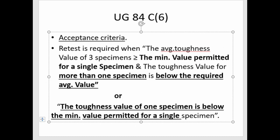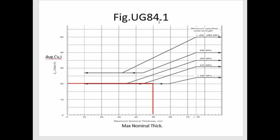In order to obtain these values, we refer to figure UG 84.1, which gives the relationship between the average toughness value on the y-axis and the maximum nominal thickness on the x-axis, with curves for minimum specified yield strength. For example, we have a pressure vessel fabricated from SA516 Grade 70 material of thickness 50 mm. We draw a perpendicular line from 50 mm until it touches the minimum specified yield strength curve.